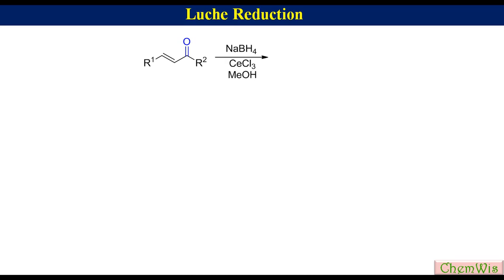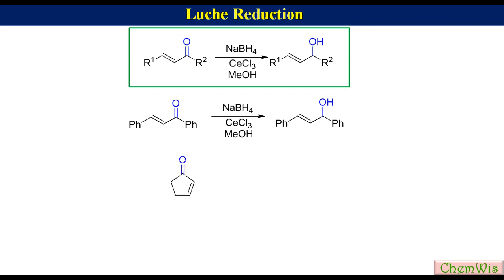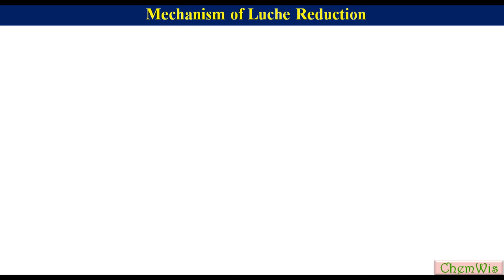As a solvent to produce allylic alcohol is called Luche reduction. For example, reduction of chalcone to 1,3-diphenyl propenol, reduction of cyclopentanone to cyclopentanol, reduction of cyclohexanone to cyclohexanol, etc.